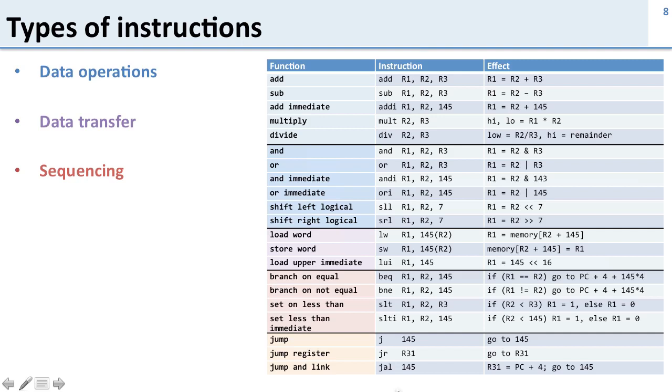So now let's take a look at some of the actual MIPS instructions. Here are the other color-coded blue for data operations, purple for data transfer, and red and orange for sequencing. What we have here is we list the function, that is the name of the instruction, an example of the instruction so actually how you write it, and then the effect the instructions have.